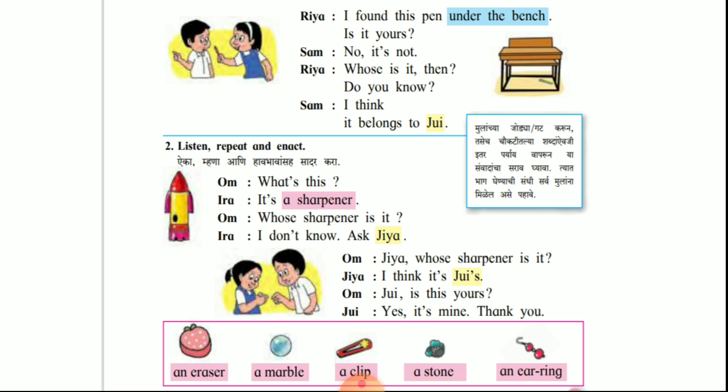Om: What's this? He kaya hai? Ira: It is a sharpener. Te pencil tog kaadnayache saadhana ahe. Om: Whose sharpener is it? Te sharpener kona cha ahe?